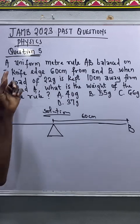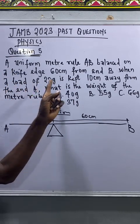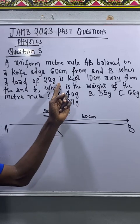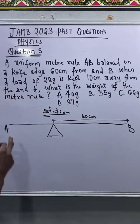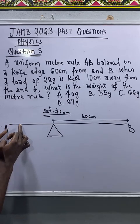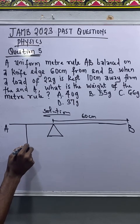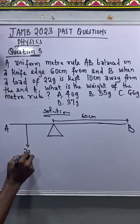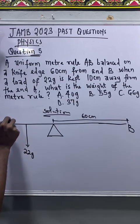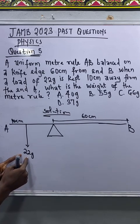And when a load of 22 gram is kept 10 centimeter away from end A, that means from end A we measure 10 centimeter. So we have a load 22 gram, 10 centimeter away.